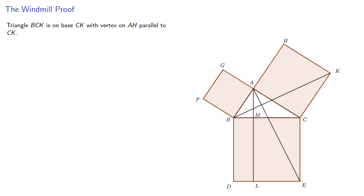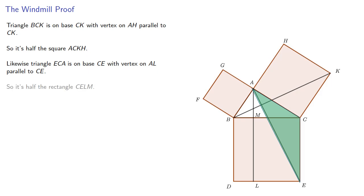Now notice that triangle BCK is on base CK with vertex on AH parallel to CK, so it's going to be half of the square ACKH. Likewise, triangle ECA is on base CE with vertex on AL parallel to CE, so it's half the rectangle CELM. So the square ACKH is equal to the rectangle CELM.